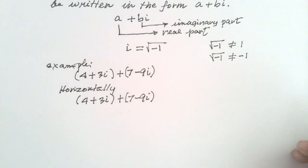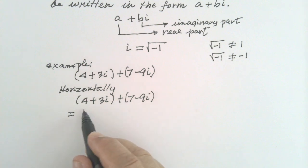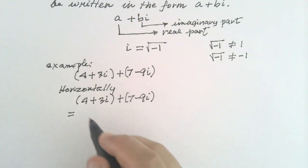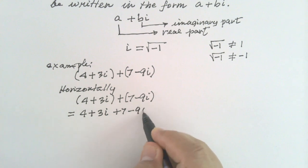The first thing to do is to remove the parenthesis. If the parenthesis is preceded by a plus sign, just remove the parenthesis. Do not change the signs of the terms inside the parenthesis. This is understood to be plus. So, 4 plus 3I. This is plus. So, plus 7 minus 9I.